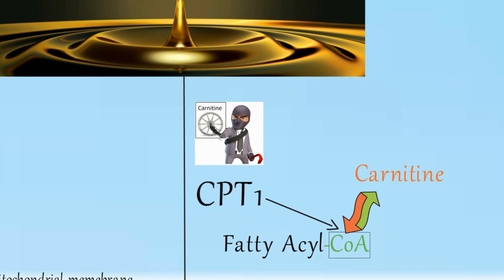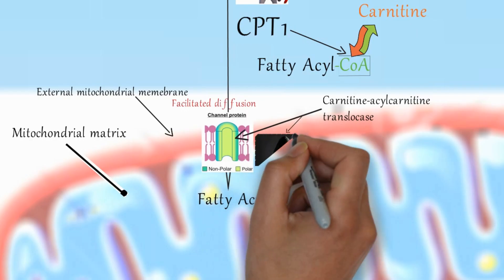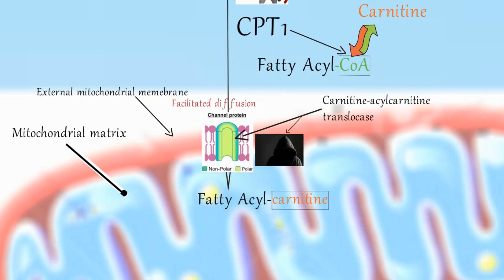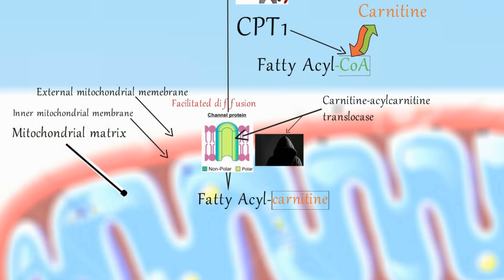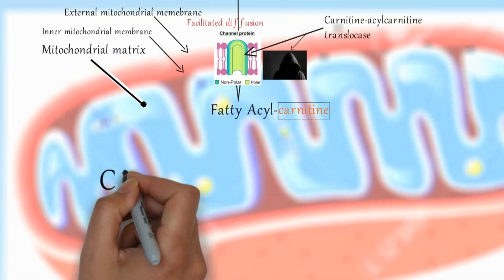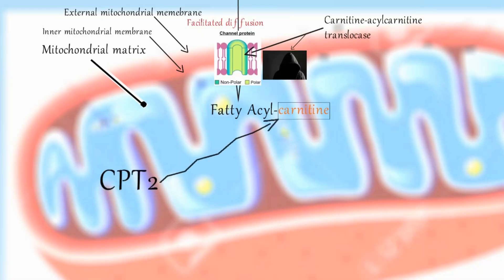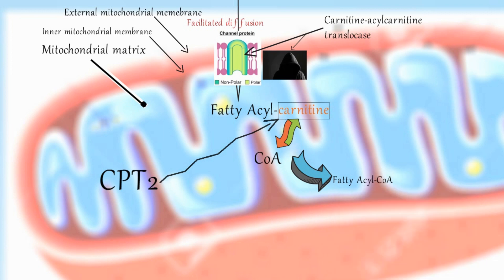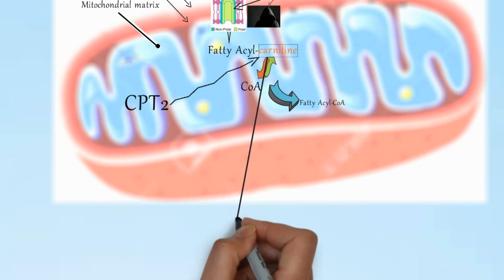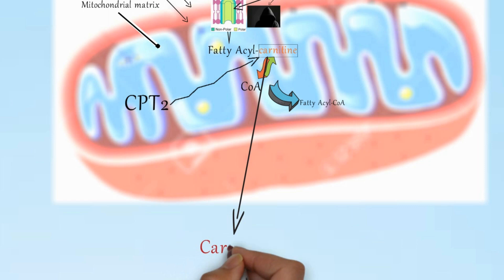CPT1 passes the job to the next thief, carnitine acyl-carnitine translocase, which transports the fatty acyl-carnitine into the mitochondrial matrix. Once inside the matrix, CPT2 exchanges carnitine for CoA to regenerate fatty acyl CoA, which is now ready to enter beta oxidation and produce energy. The free carnitine is transported back out to renew the cytoplasmic pool and allow the transfer process to continue.